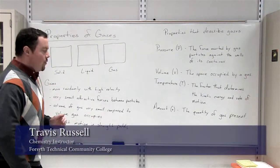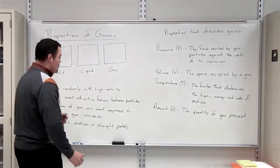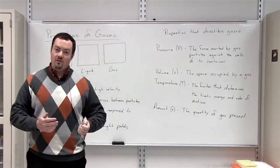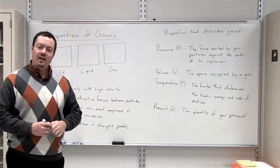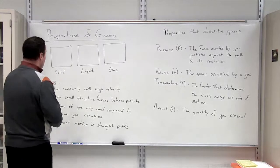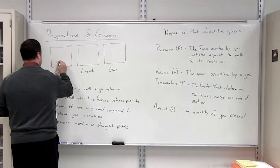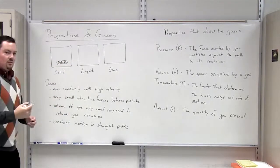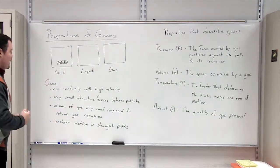In today's video we're going to go over the properties of a gas, and in order to go over these properties that a gas has, differing from that of a liquid or solid, let's talk about what a solid, liquid, and gas looks like at the molecular level. Whenever we're talking about a solid, we're talking about particles that are very close together, because of the attractive forces that bind the particles.